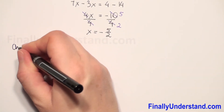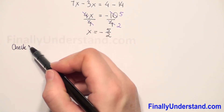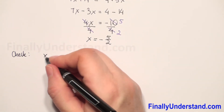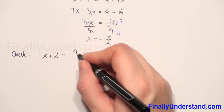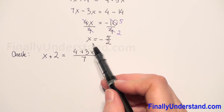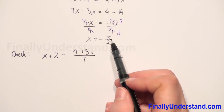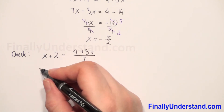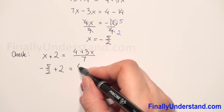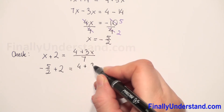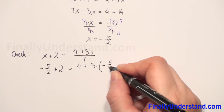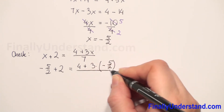Now let's verify the solution. We first copy our original equation: x plus 2 is equal to 4 plus 3x over 7. Next we substitute x by negative 5 over 2. So we will have negative 5 over 2 plus 2 is equal to 4 plus 3 times negative 5 over 2, all over 7.